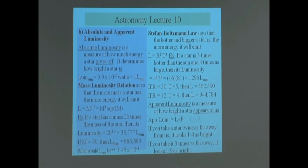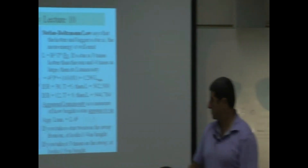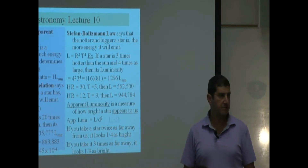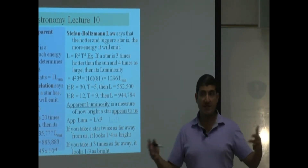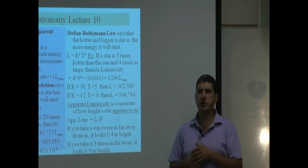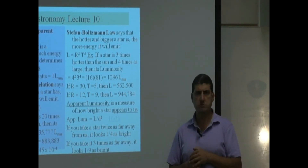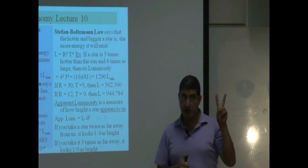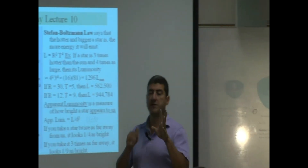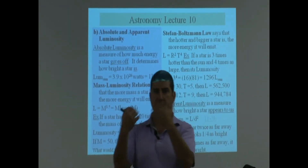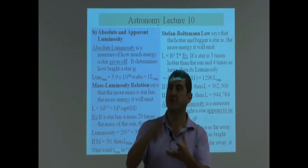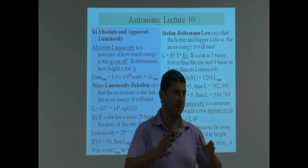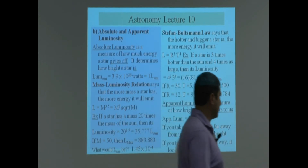If the Earth was at three AUs away, how bright would the sun appear? One-ninth as bright. You see how quickly the brightness drops? At two AUs away it's definitely going to be cold, because you'd get one-fourth the amount of sunlight and one-fourth the amount of energy. The temperature of the planet drops rapidly as you go farther.